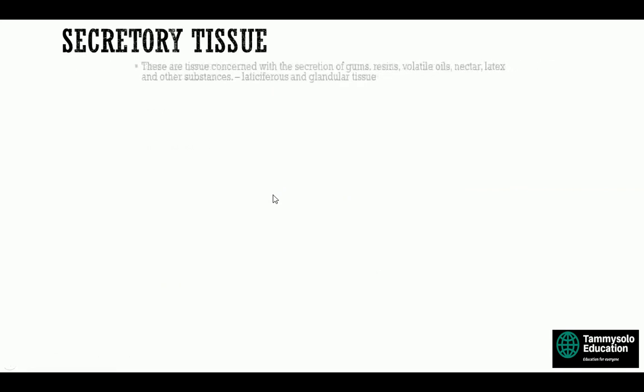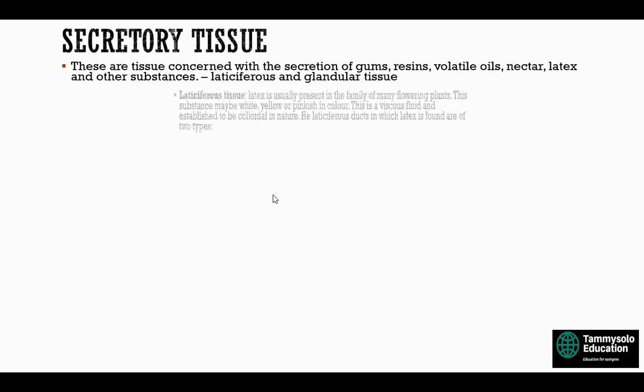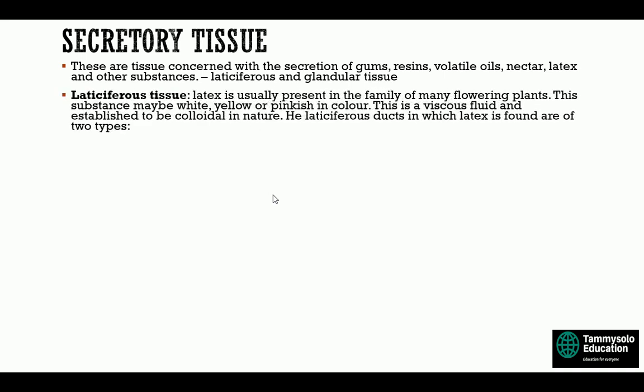Secretory tissues are tissues concerned with the secretion of gums, resins, volatile oils, nectar, latex, and other substances. Laticiferous and glandular tissues are examples of such secretory tissues. Latex is usually present in the family of many flowering plants; this substance may be white, yellow, or pinkish in color. It is a viscous liquid, established to be colloidal in nature. The laticiferous ducts in which latex is found are of two types.